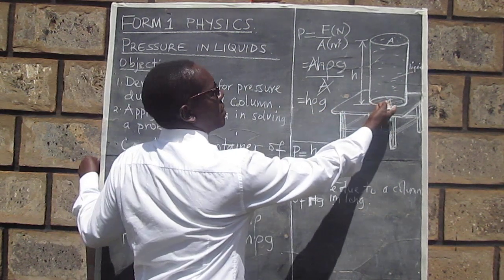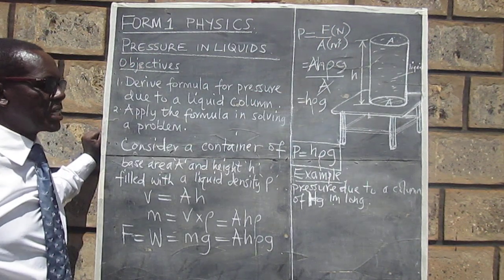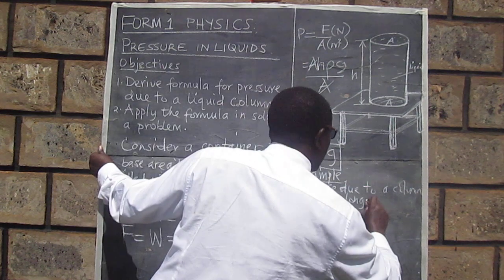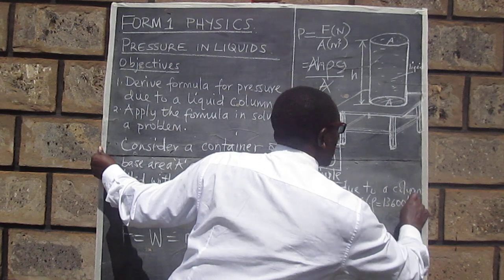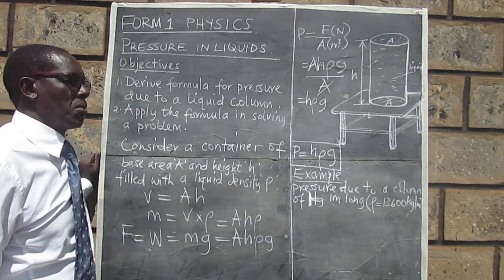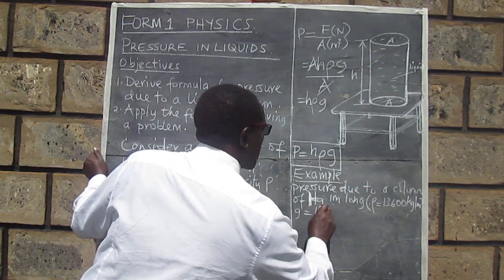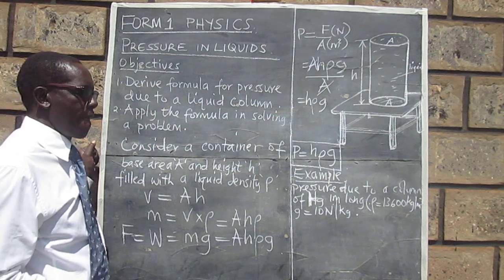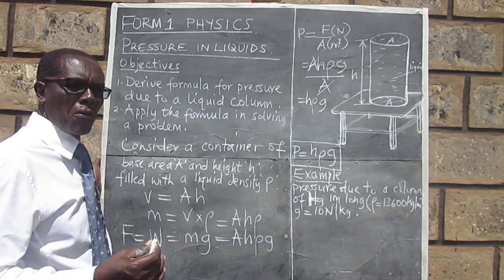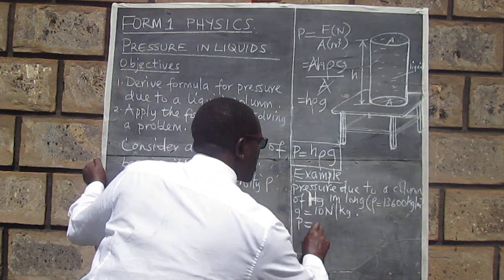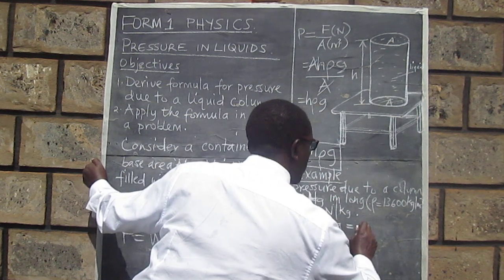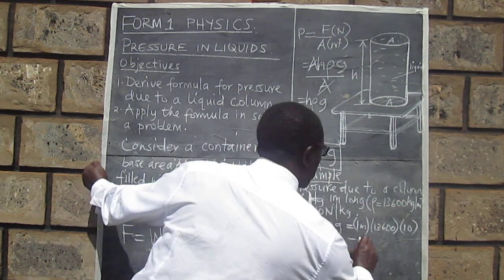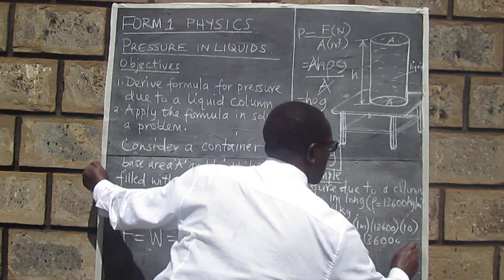We are thinking of a column of mercury with a vertical length of one meter. To work this out, we need the density of mercury, which is 13,600 kg/m³. We also need the acceleration due to gravity, which we know as 10 N/kg. Using the formula P = H·ρ·g, this gives us: H = 1 m, density = 13,600, and g = 10. This finally gives us 136,000 pascals.